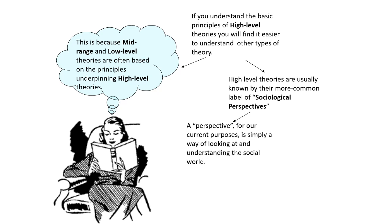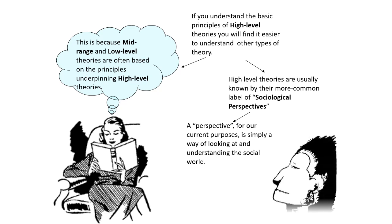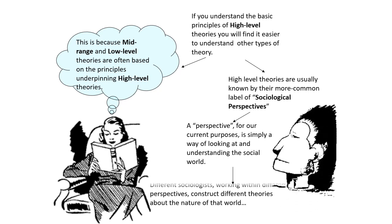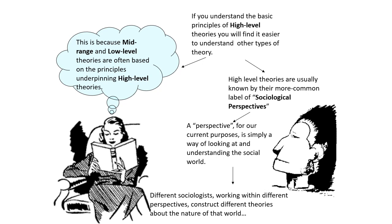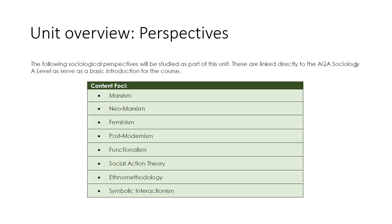To understand the basic principles of high-level theories, you'll also find it easier to understand other types of theory, because mid-range and low-level theories are often based upon the principles underpinning high-level theories. High-level theories are more commonly known as sociological perspectives — a perspective is simply a way of looking at and understanding the social world. Different sociologists, working within different perspectives, construct theories about the nature of the world. The following sociological perspectives will be studied as part of this unit, all directly linked to AQA Sociology A-level: Marxism, Neo-Marxism, Feminism, Postmodernism, Functionalism, Social Action Theories, Ethno-Methodology, and Symbolic Interactionism.